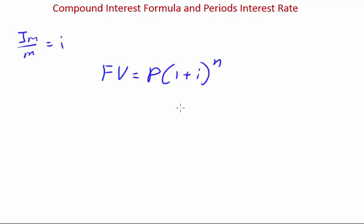Now, I want you guys to replace i with what we have here. So future value equals principal open bracket 1 plus jm on m, because this is your interest rate per period.